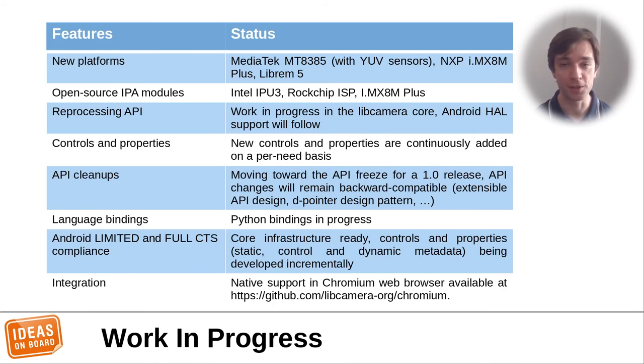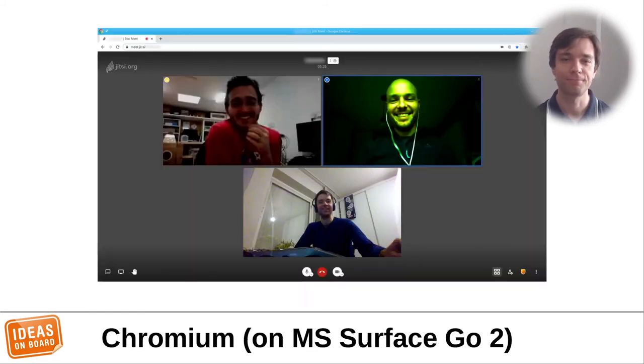On the integration side, we have a prototype of native LibCamera support for the Chromium web browser. This is a screenshot of a video call in Chromium with Jean-Michel, one of our developers on the top right, who's using a Surface Go 2 running LibCamera. This is running an old version of LibCamera, from before we had IPU3 algorithms, which explains why the image is very green. Today, the quality is much better, and you would actually not notice that LibCamera is involved if I took a new screenshot of what we can do today. This, I think, is likely how we will judge if LibCamera is successful in the end. We'll have done a good job if users don't even notice it exists.